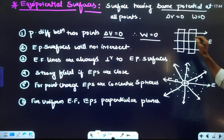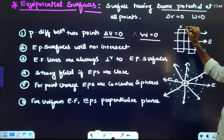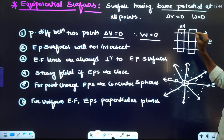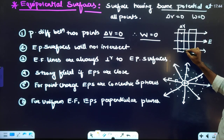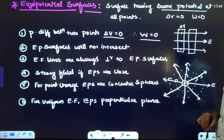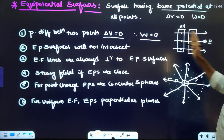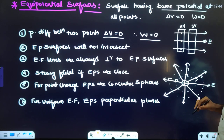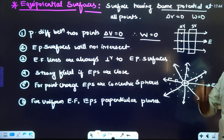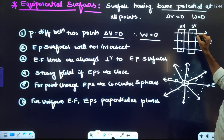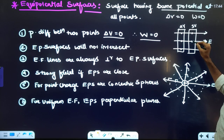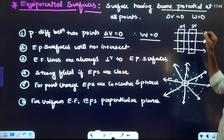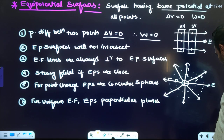For example, if a plane has a potential of 4 volts, then every point on that plane will be 4 volts. Moving in the direction of the electric field to the next plane, the potential will reduce to, say, 3 volts at every point on that plane — because potential decreases in the direction of the electric field. That is all about equipotential surfaces.